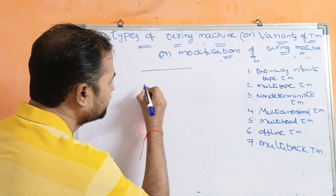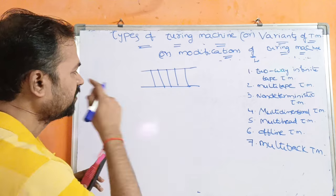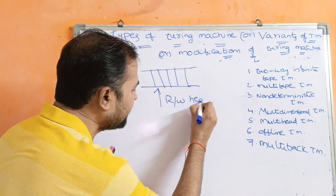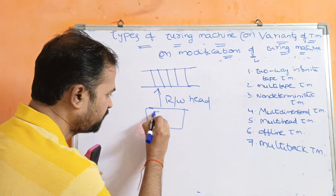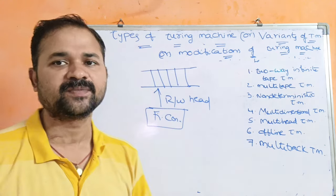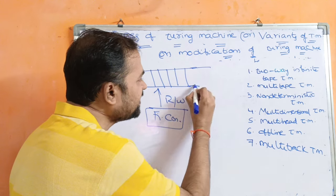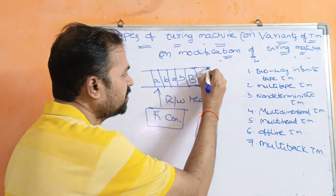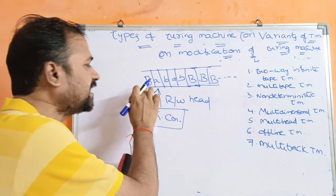Generally, any Turing machine mainly contains 3 components. The first component is the input tape, which is divided into a number of cells where each cell can store one symbol at a time. Next we have a read-write head, with which we can perform read or write operations. Next we have finite control. In a standard Turing machine, the tape is infinite at the right-hand side with infinite blank symbols, but has only one blank symbol at the left-hand side.